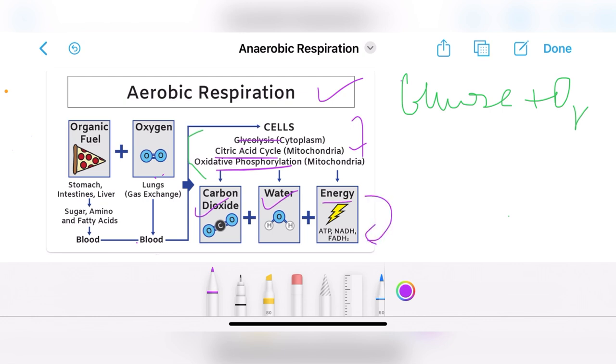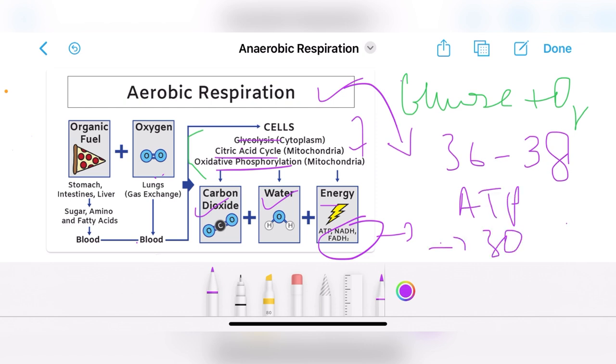This NADH and FADH2 are high energy molecules. One NADH is equivalent to 2.5 to 3 ATP molecules. So theoretically, aerobic cellular respiration gives 36 to 38 ATP molecules.